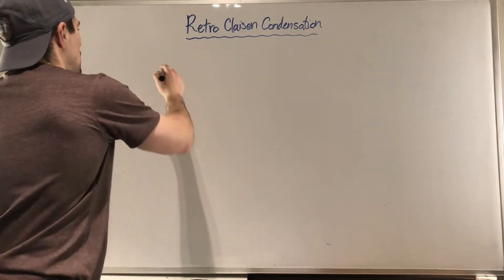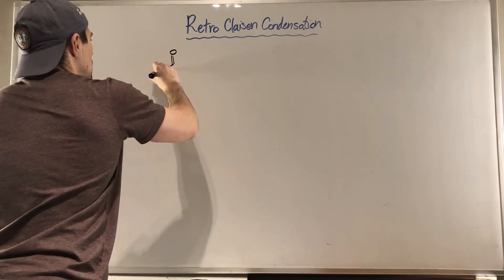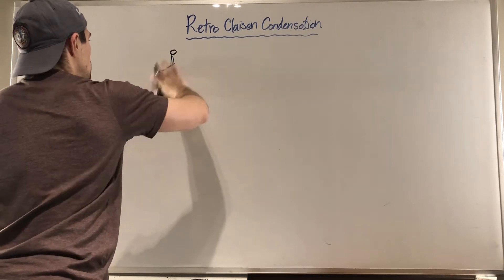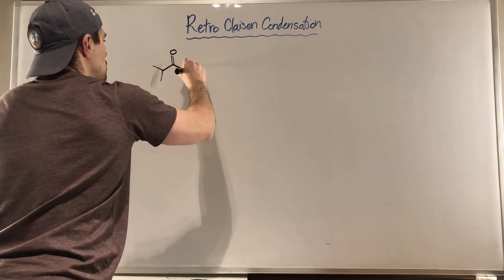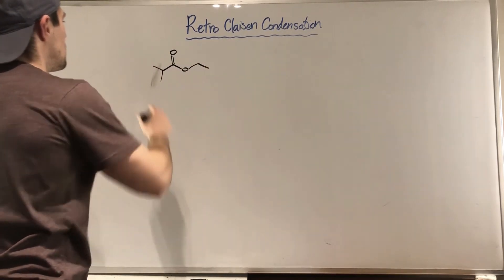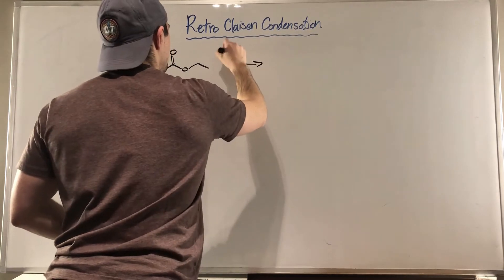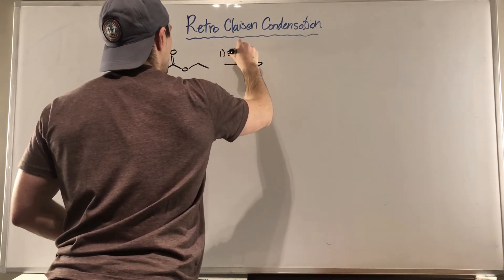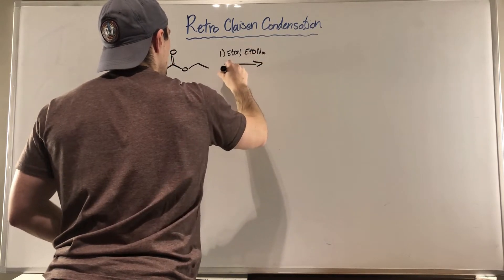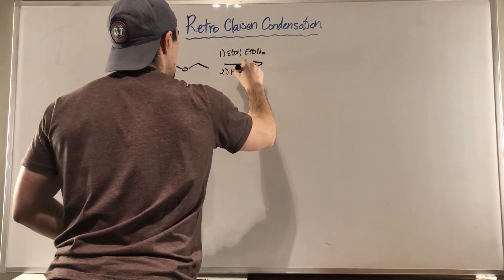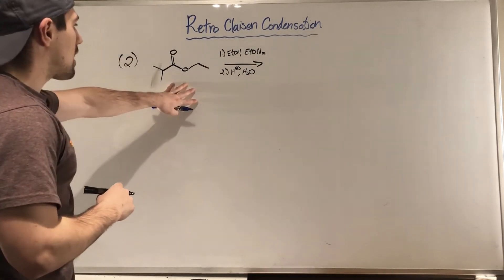So for example, we looked at an ester enolate. We can clearly see this was an attempted Claisen condensation with the fact that we have an ester.